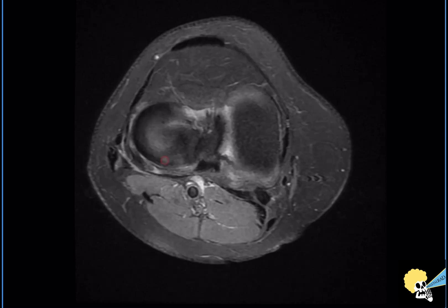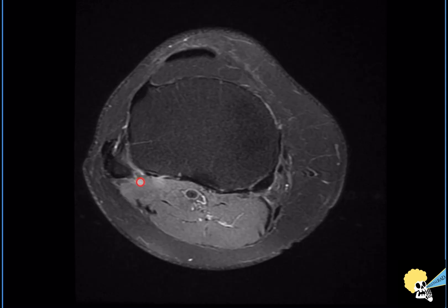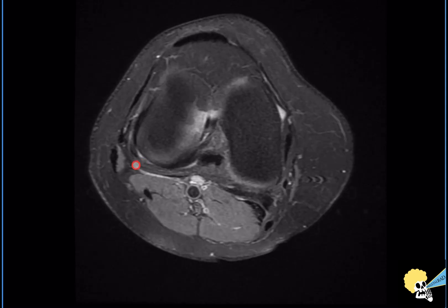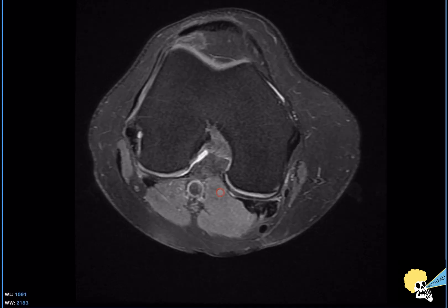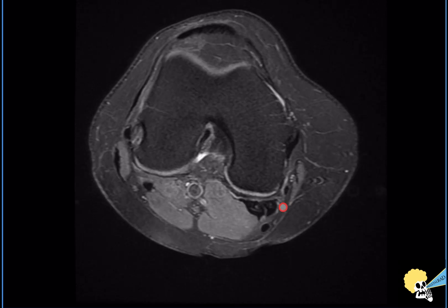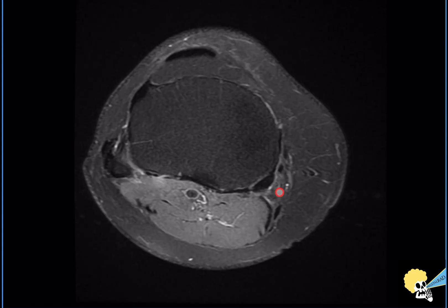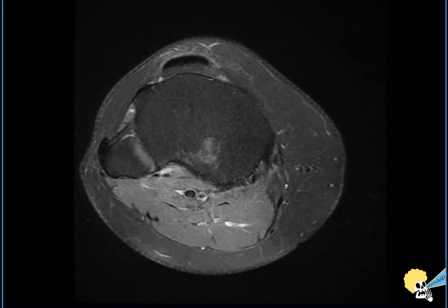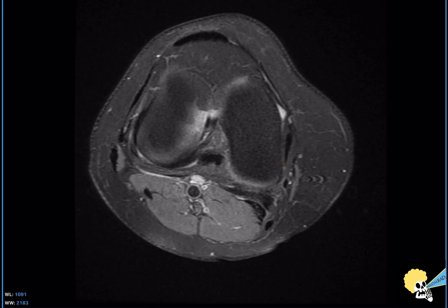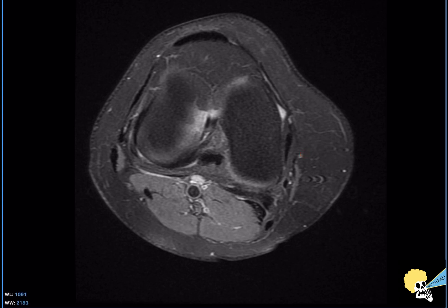Also on the axial image, I like to evaluate the posterolateral corner — making sure there is no abnormality in signal intensity, cysts, or any edema that may suggest injury. I also look at the posteromedial corner, in particular the semimembranosus and medial head of the gastrocnemius. Where they cross is where a Baker's cyst would be, but I make sure the tendons are all right. Then I look at the pes anserinus tendons — the sartorius, the gracilis, and the semitendinosus — making sure there is no fluid underneath their insertion to rule out bursitis.